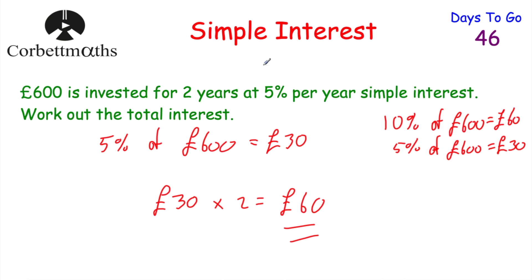So in this video we've looked at simple interest. Simple interest is where the amount of interest stays the same every single year — you just work out the percentage of how much money is invested, and that's the interest earned every year. Tomorrow we're going to look at compound interest. I prefer compound interest because whenever you invest money in the bank, often you'll earn compound interest, and it's a bit more exciting because as time goes on you earn more and more interest.